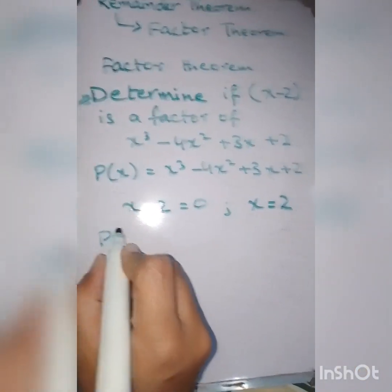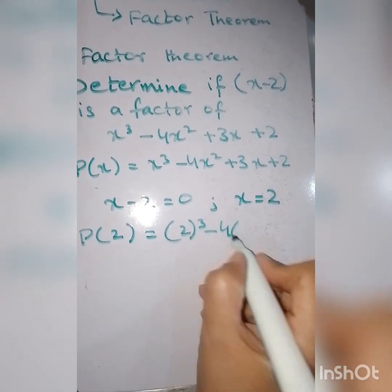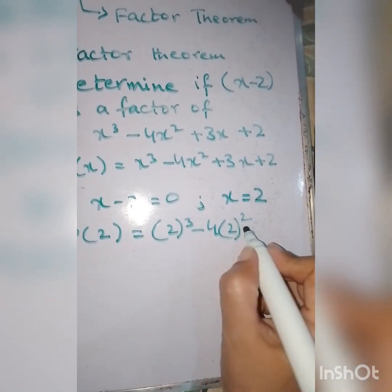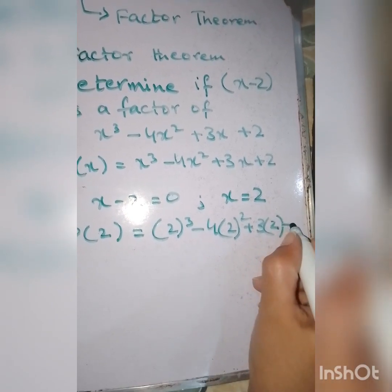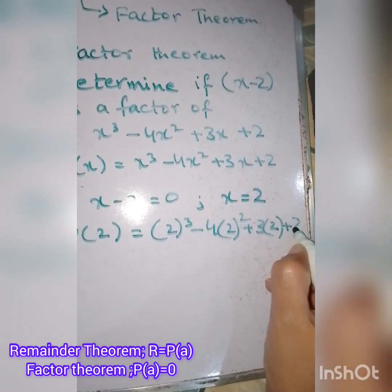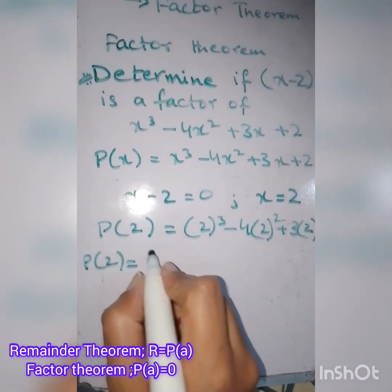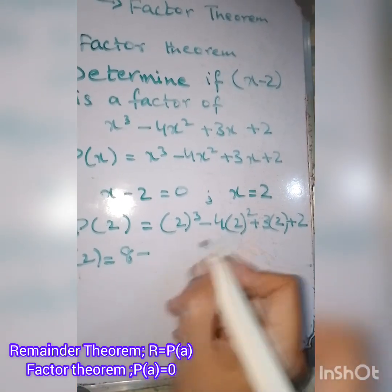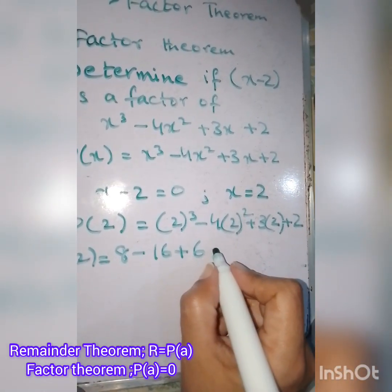So P(2) equals 2³ - 4 times 2² + 3 times 2 plus the constant 2. P(2) will equal 8 - 4 times 4 is 16, plus 3 times 2 is 6, plus 2.